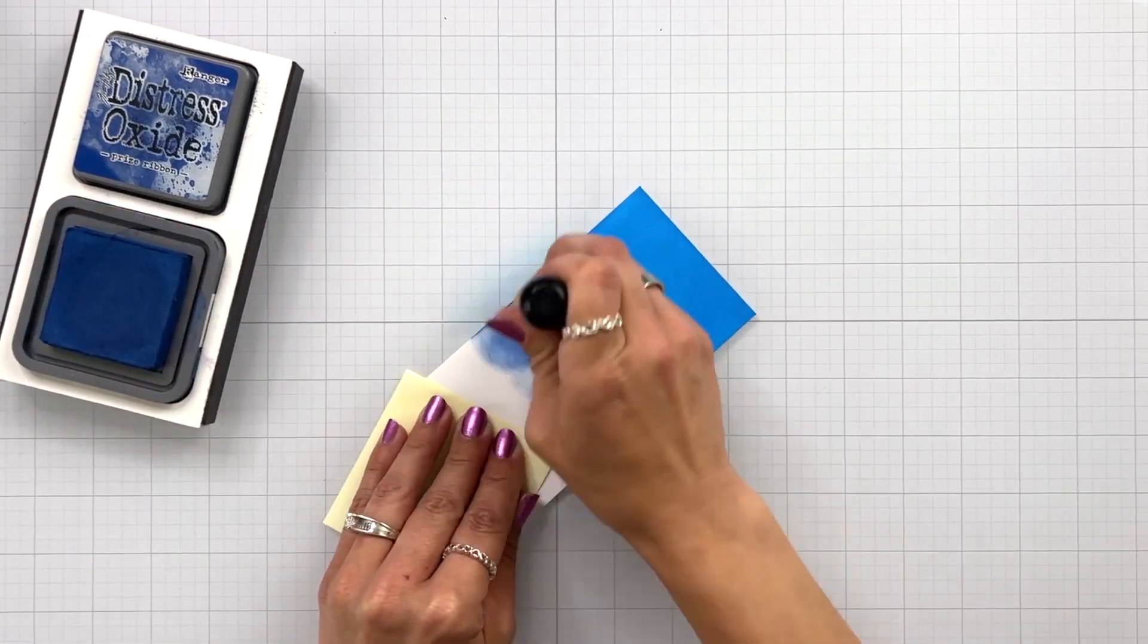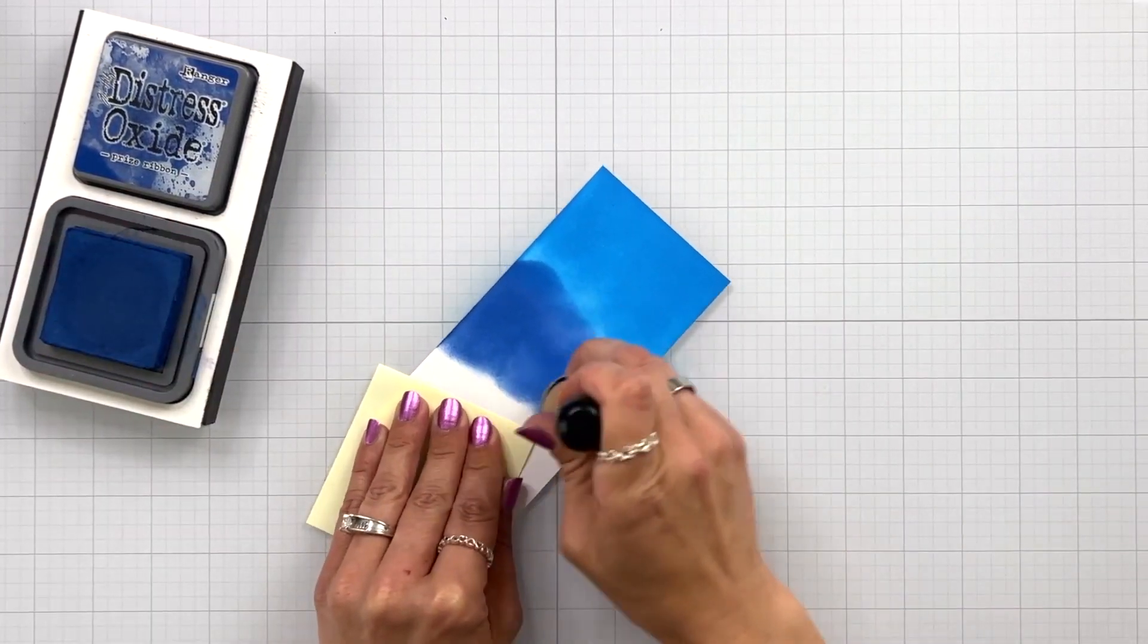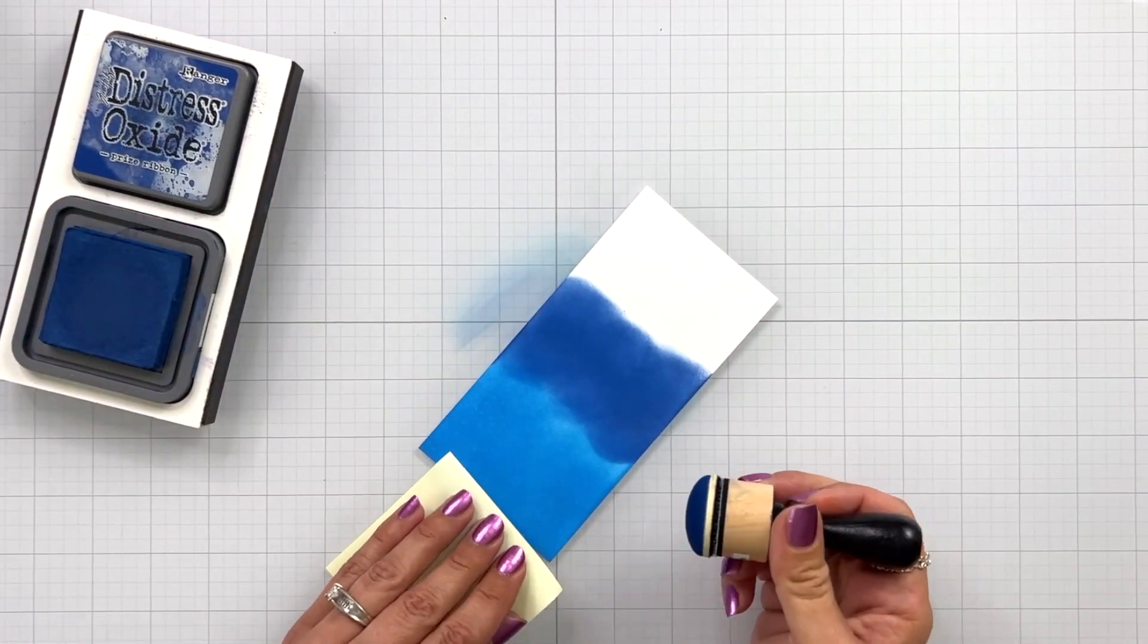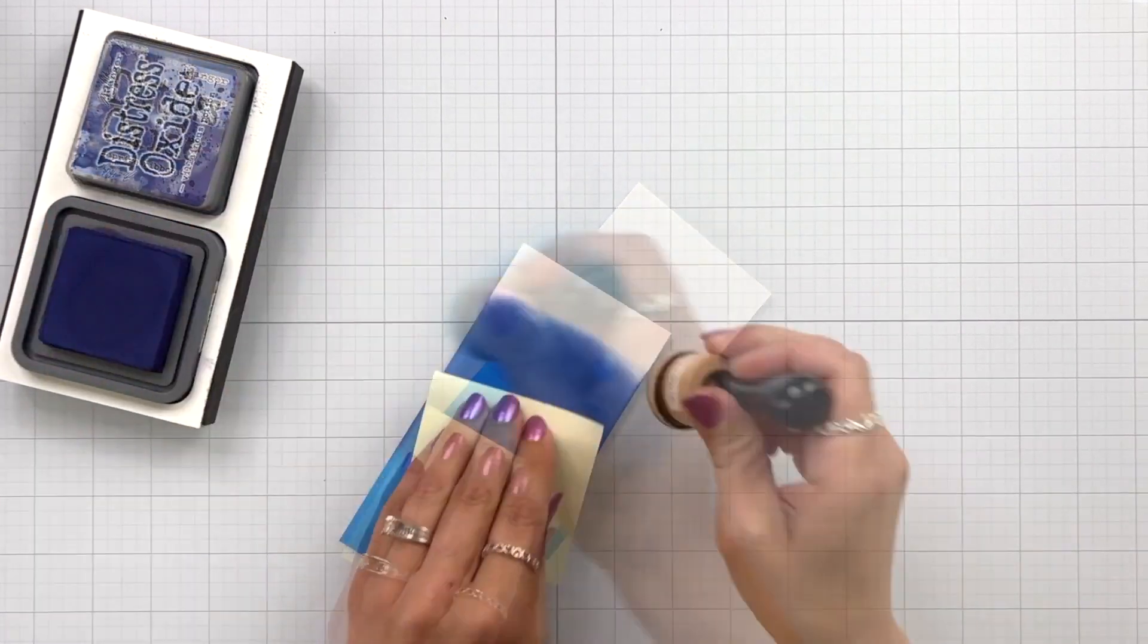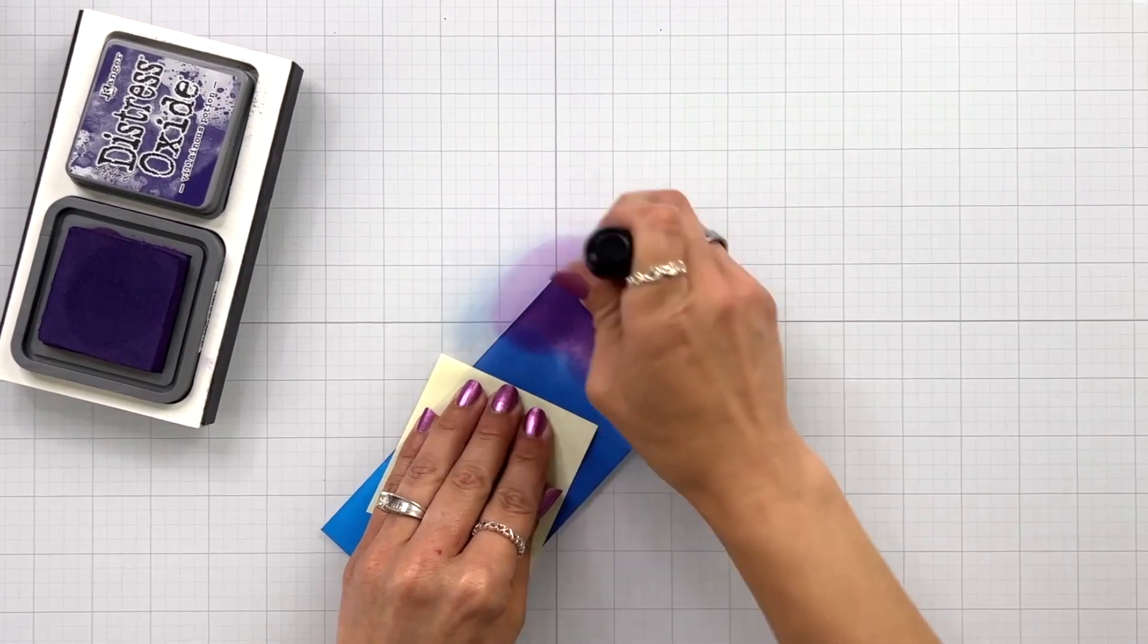I blended about a third of the way up, then in the middle I'm coming in with Prize Ribbon, and then Villainous Potion at the top. Right now I am just laying down my first layers. I do find that the more ink that I add, the easier that it is to blend.